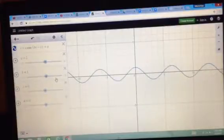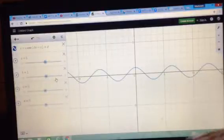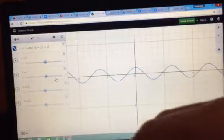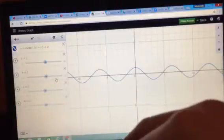So far I have y equals a times cosine of b times x minus c plus d. First what I want to do is the horizontal shift, which is the c variable.